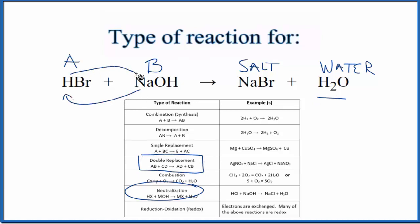So we have H with the OH. HOH is H2O and the Na goes with the Br. That gives us NaBr. So it's a double replacement reaction as well.